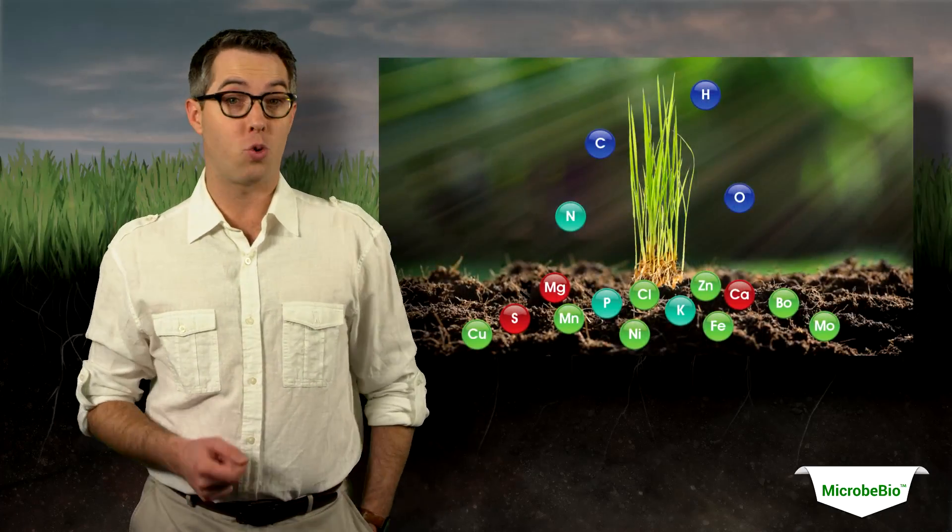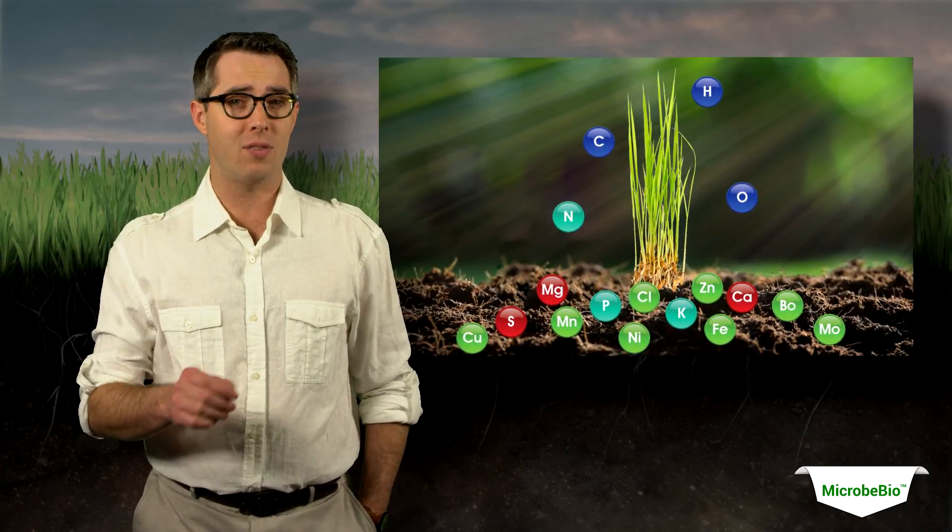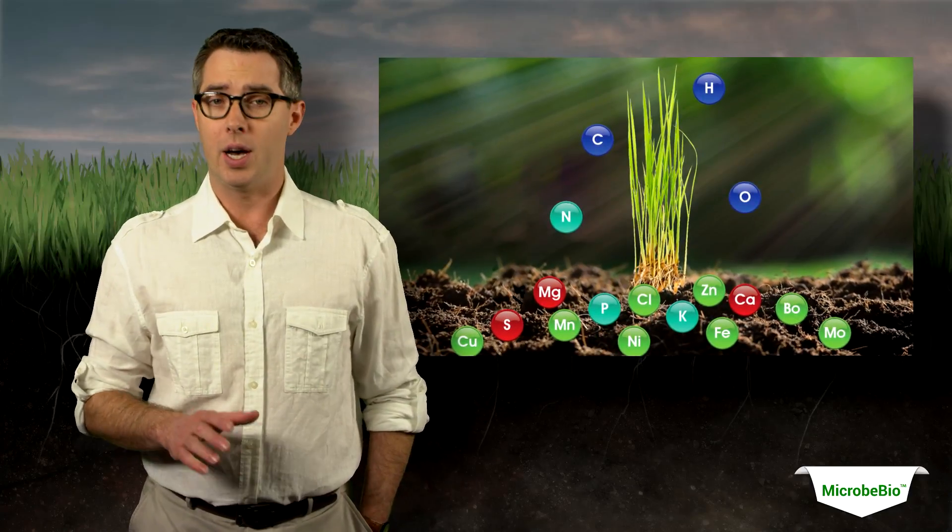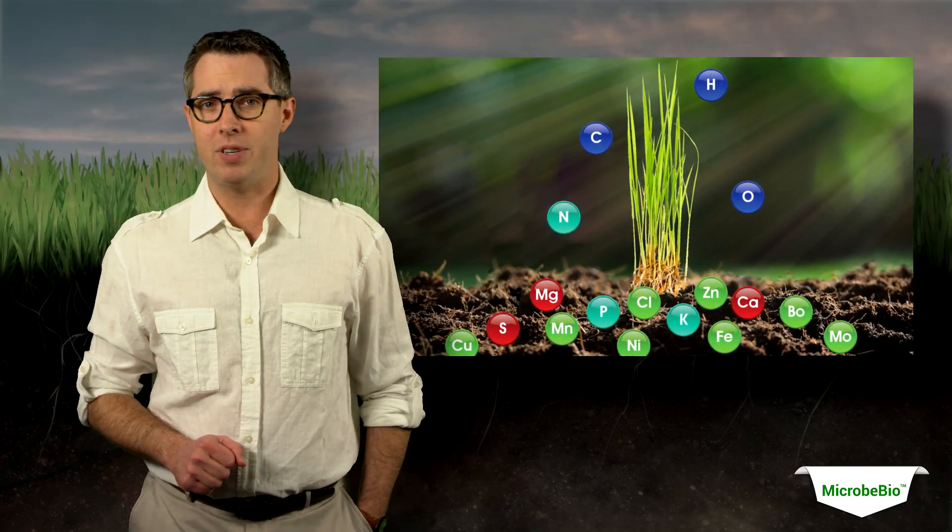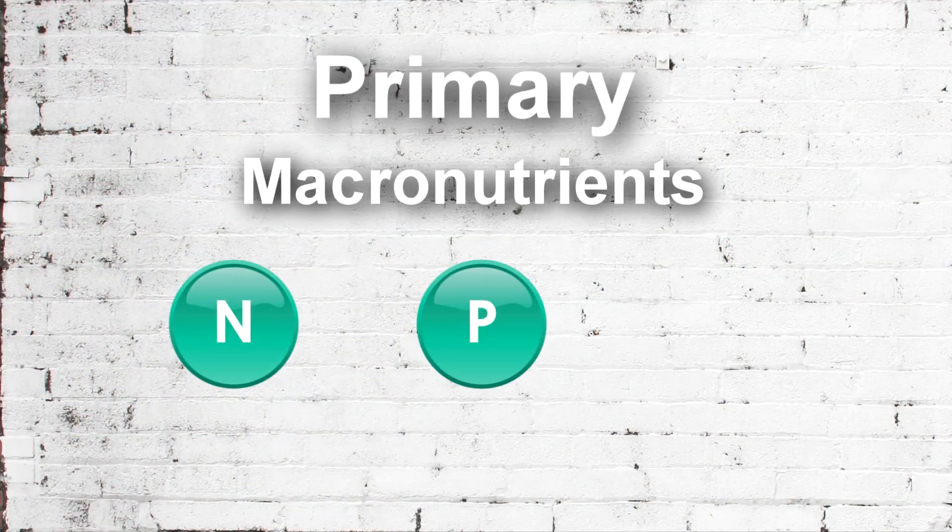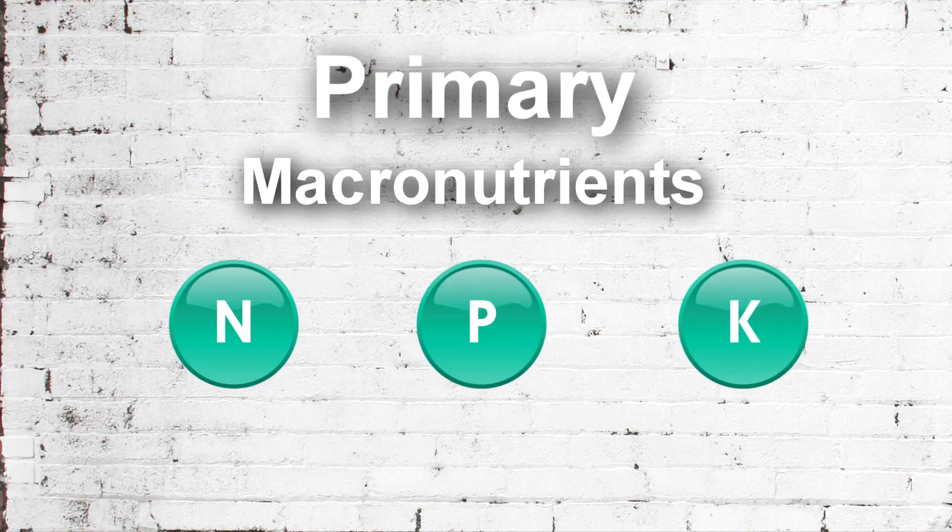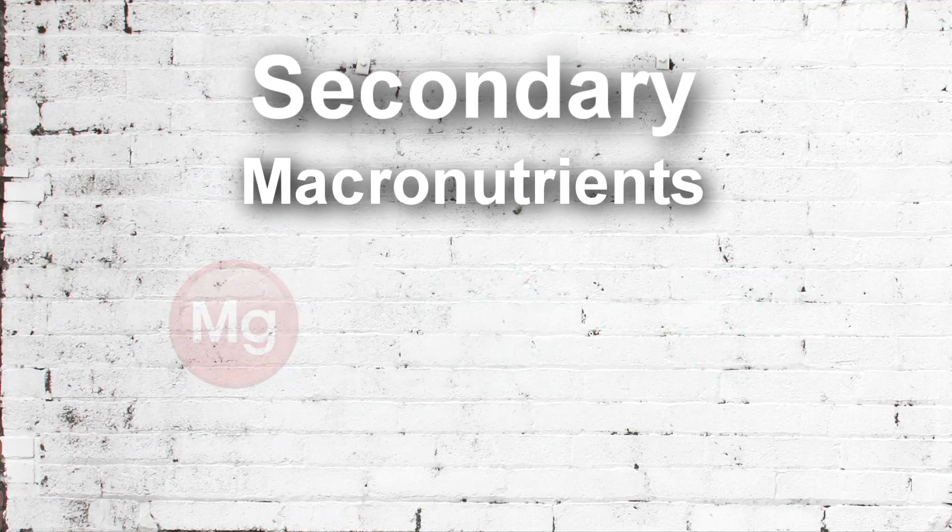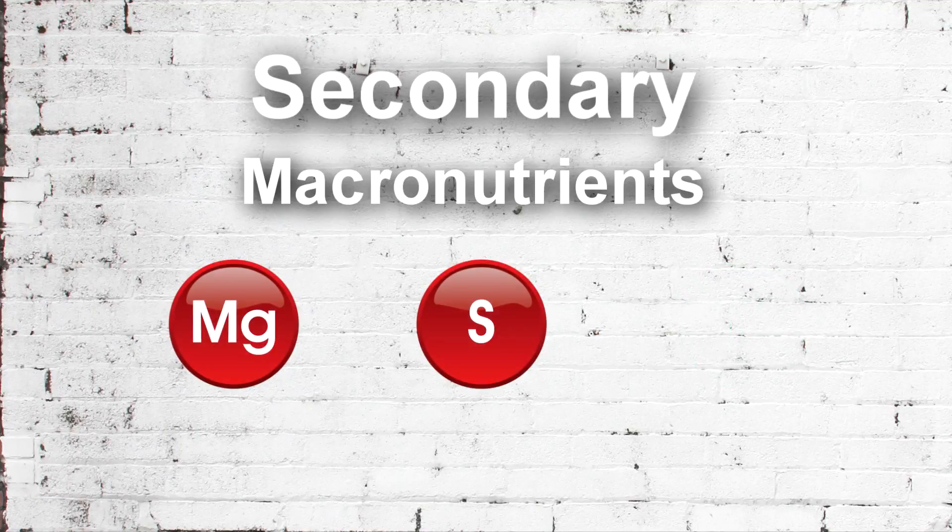Plants are complex organisms that require many different forms of nutrients. Of these nutrients, there are 17 that are essential for plant health. The primary macronutrients: nitrogen, phosphorus, potassium. Secondary macronutrients: magnesium, sulfur, calcium.